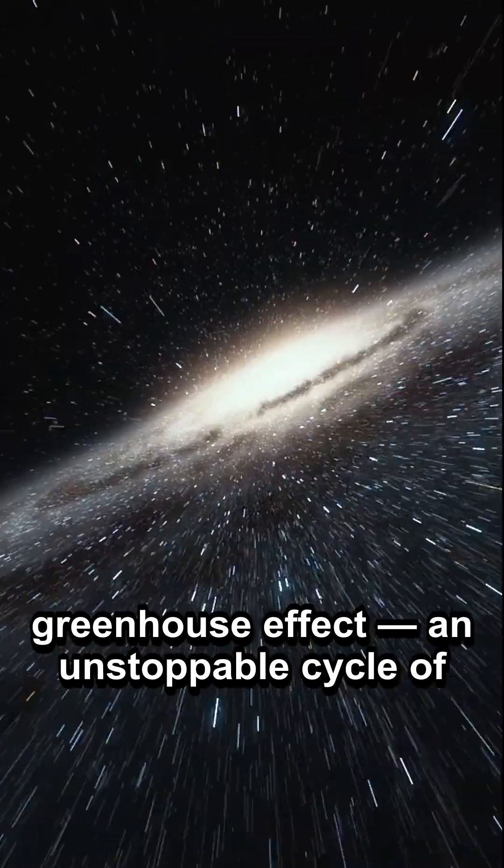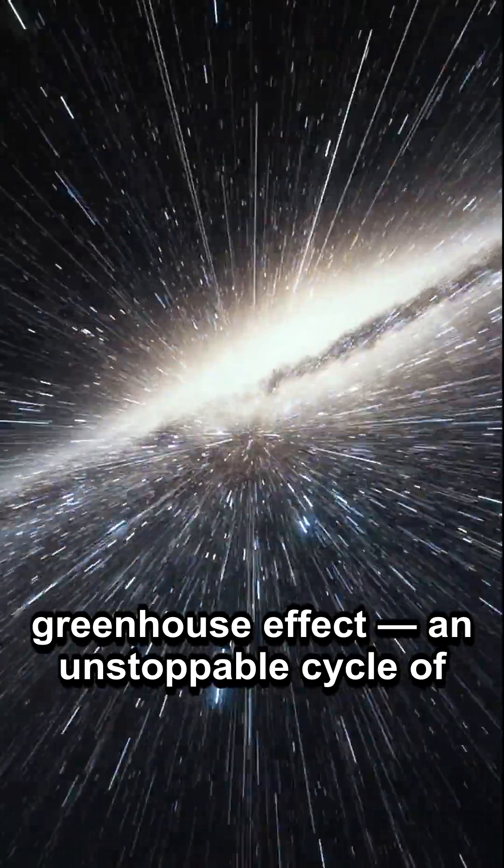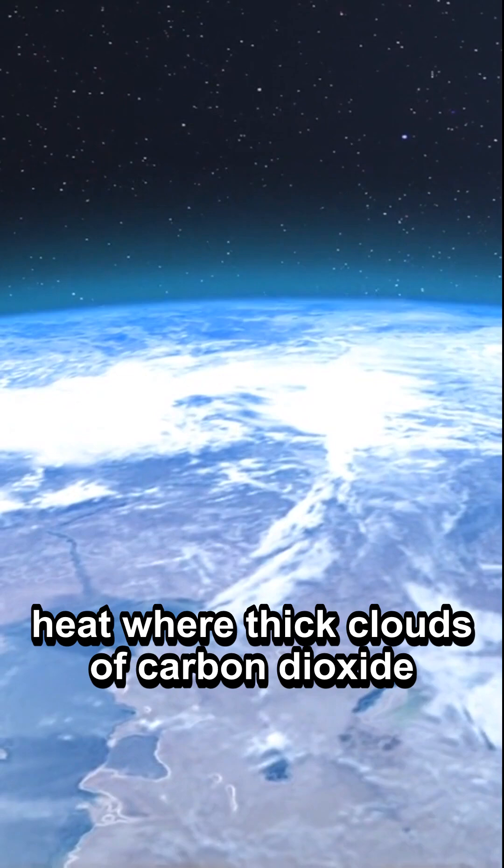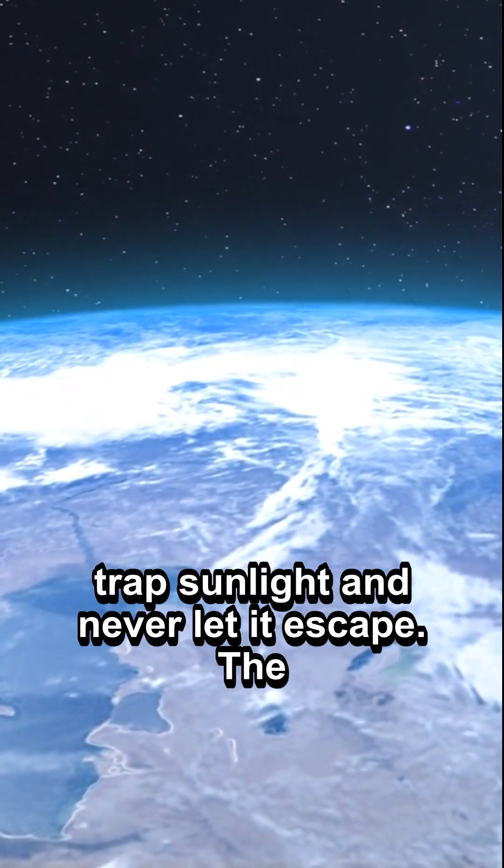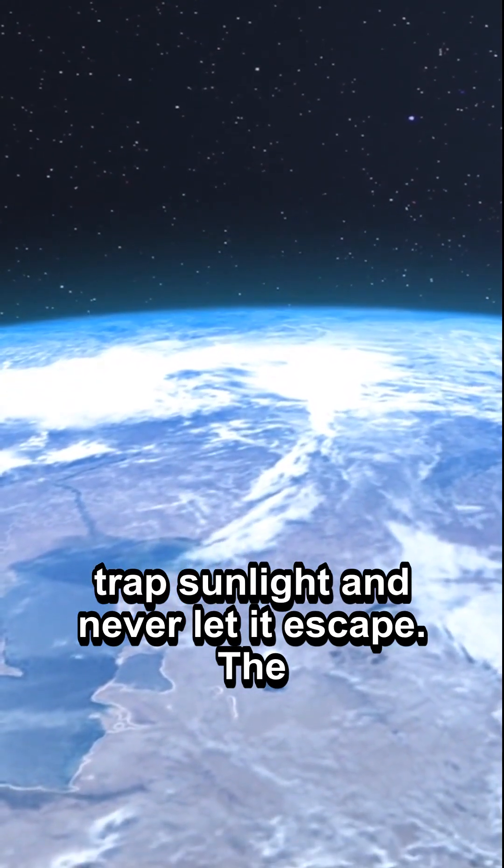That's because Venus is trapped in a runaway greenhouse effect. An unstoppable cycle of heat, where thick clouds of carbon dioxide trap sunlight and never let it escape.